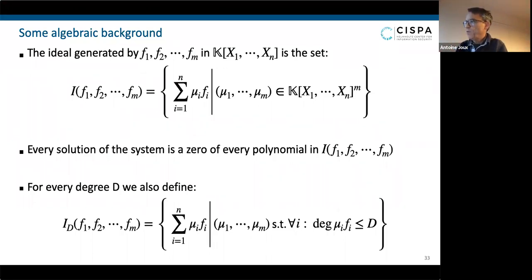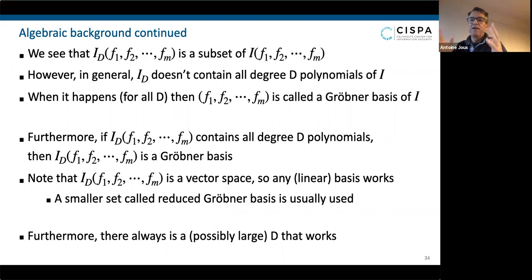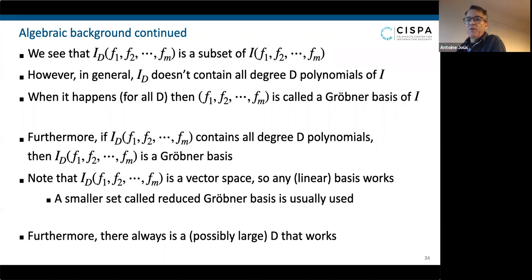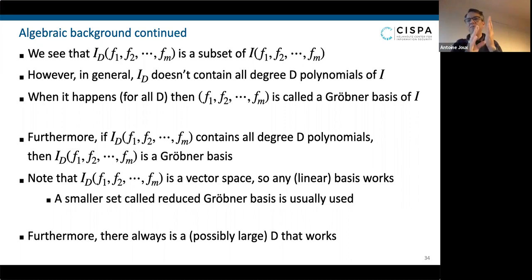It's clear that I_D is a subset of I. But something which might be surprising is that in general I_D does not contain all degree-D polynomials from I — there could be extra polynomials. Where do they come from? They come from sums where some summands are of degree higher than D, but when you put them together there is a degree reduction: some of the higher-degree terms cancel and you go back to degree D, and we are missing these.